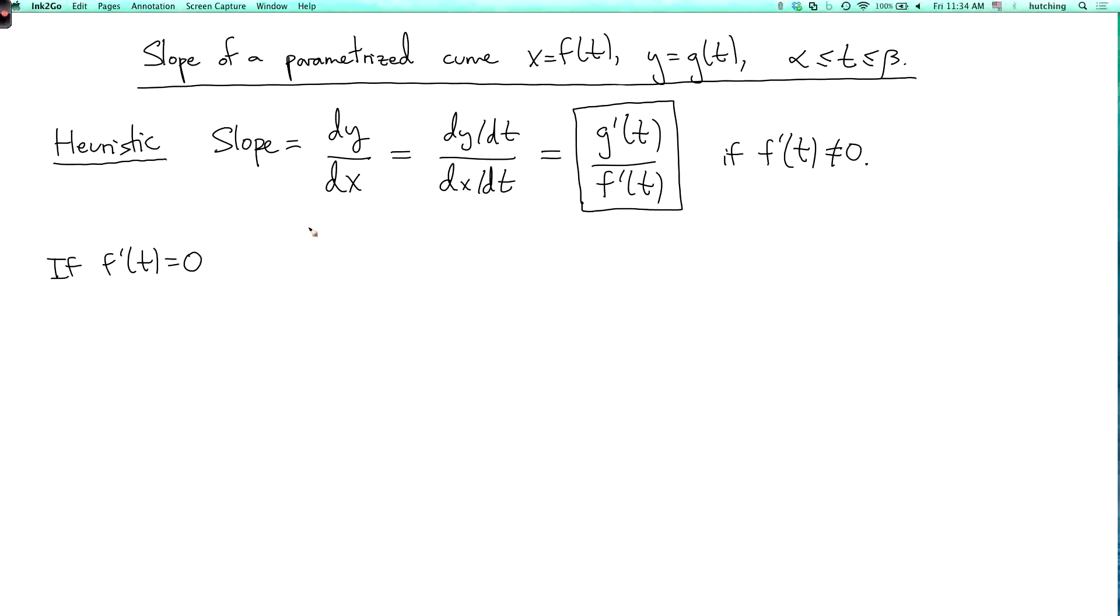And that's true if g prime is not equal to zero. So if f prime of t equals zero and g prime of t is not equal to zero, then the slope is infinite. The tangent line to the curve is vertical.